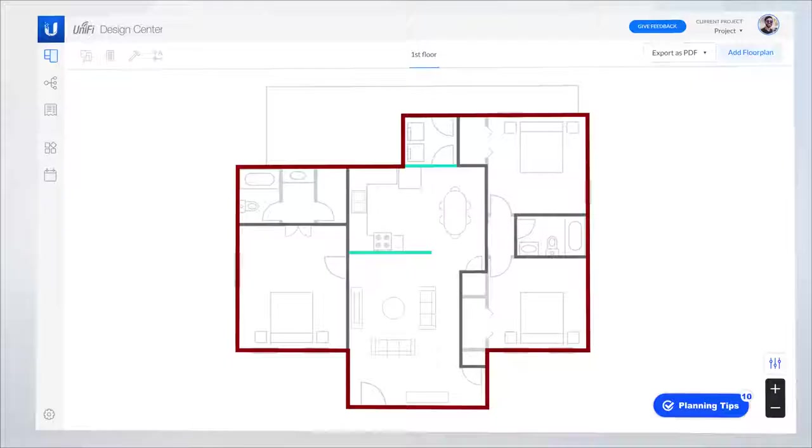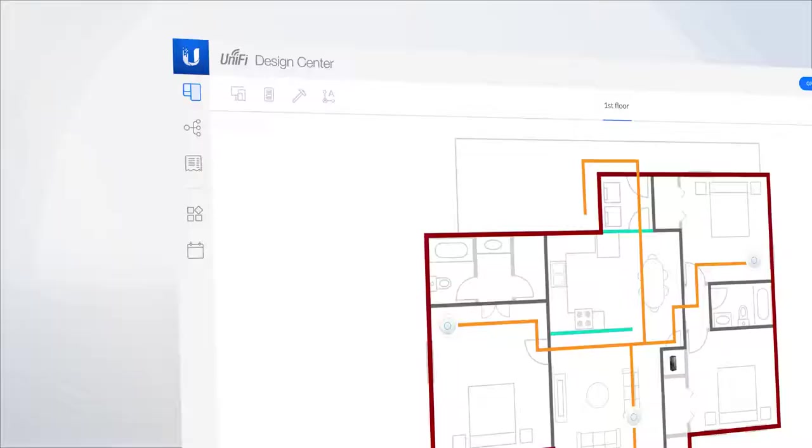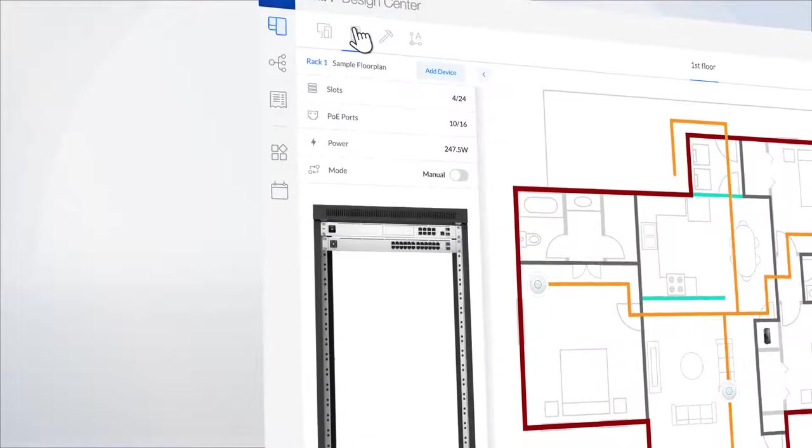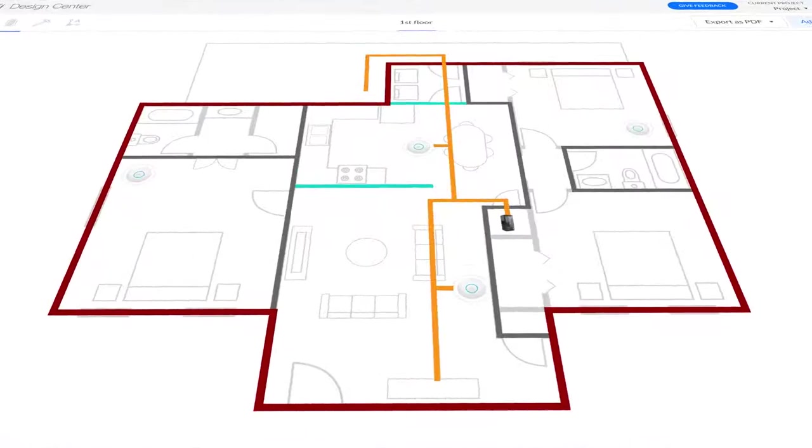I thought I'd take a moment to run you through this house that we're working on right now. We're going to put our rack into the mechanical room. That gives us good access for power and gives us access to get to the attic to make all of our wired runs. Inside that rack, we're planning on putting in a UDM Pro and a PoE switch.